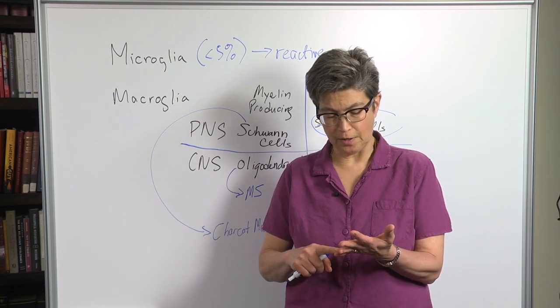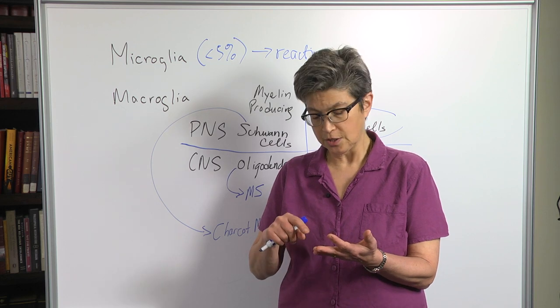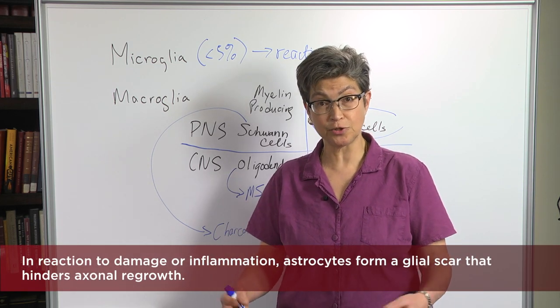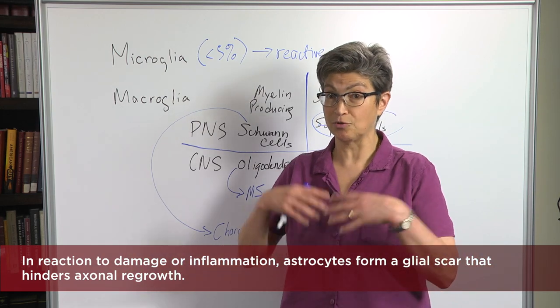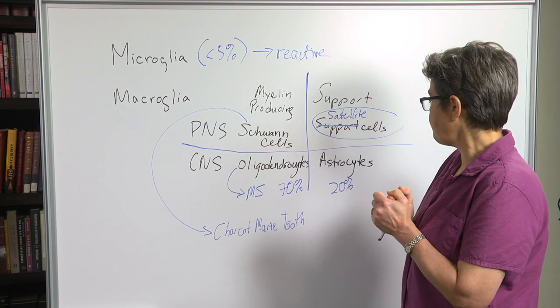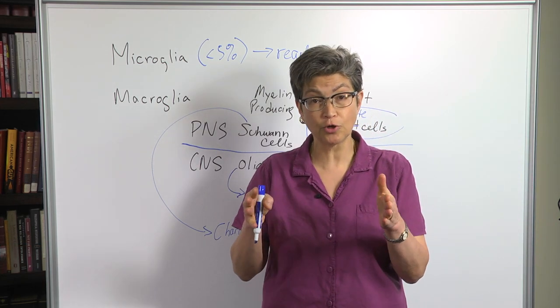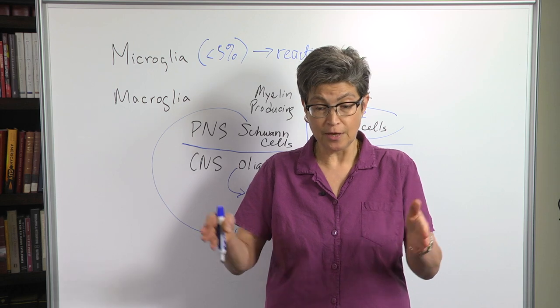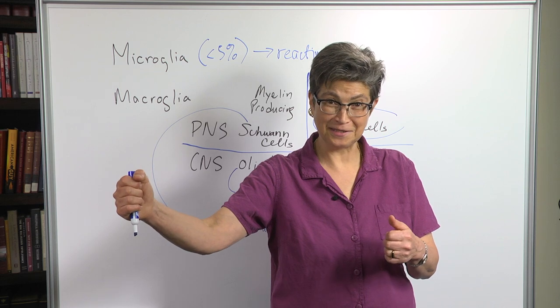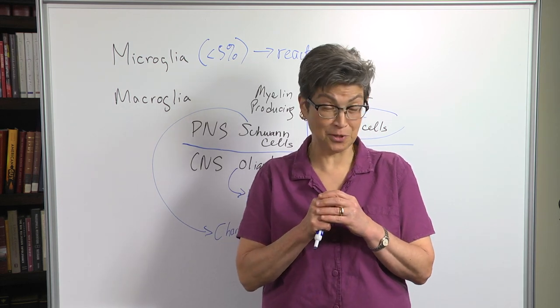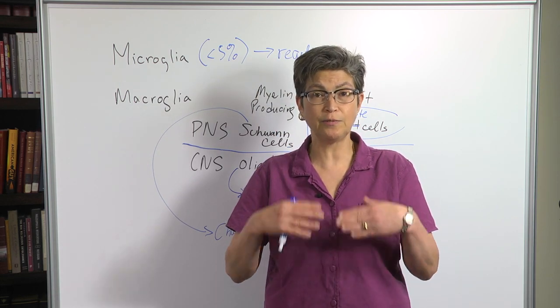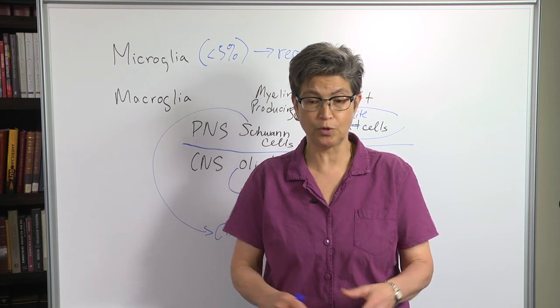The astrocytes are workhorses. They have all sorts of functions, such as mopping up excess neurotransmitters, mopping up excess ions that are in the extracellular milieu. They also are critical to synapse formation. Some synapses get stabilized by these astrocytes. They get to live. Other synapses appear not to be stabilized. They don't get to live. They die. So, it's really important. These astrocytes are very important in development.